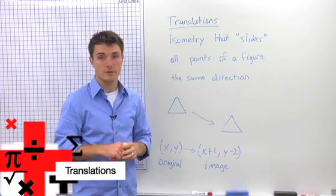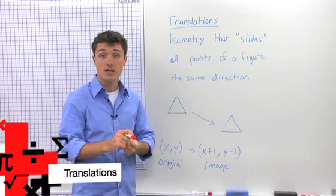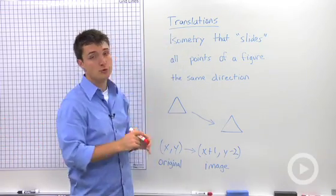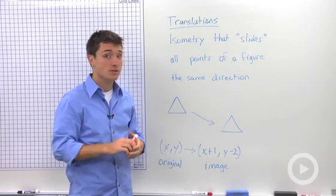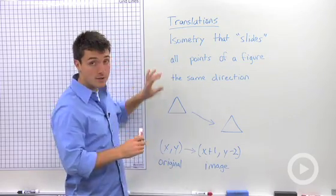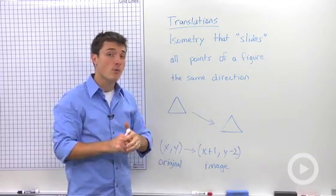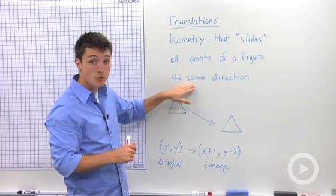There are four types of transformations, three of which are isometries. One of these is a translation. A translation is an isometry that slides or moves all of the points on a figure in the same direction.